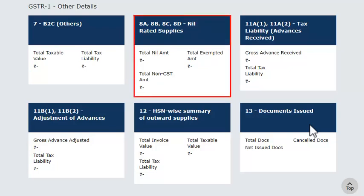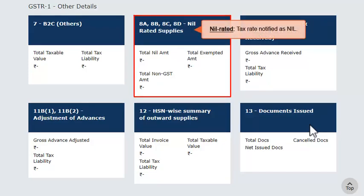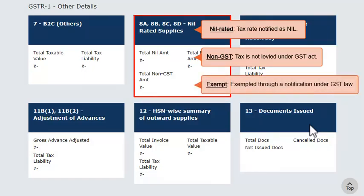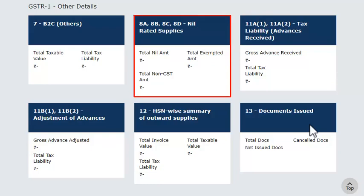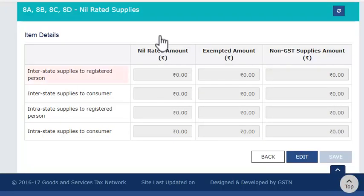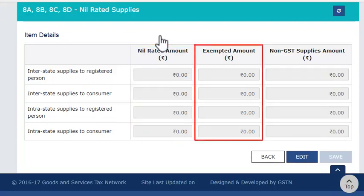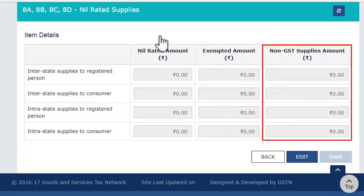GST has provisions for declaring nil rated, non-GST, and other exempt supplies. Nil rated are those supplies for which the tax rate has been notified as nil. Non-GST are those supplies on which tax is not levied under the GST Act, such as for supply of wine, beer, land, etc. Whereas other exempt supplies are those supplies which have been exempted through a notification under the GST law. While all these supplies carry a zero rate of tax, they must all be captured separately in GSTR1. Click the Nil Rated Supplies block to open its fields. The categories shown are: Interstate Supplies to Registered Person, Interstate Supplies to Consumer, Intrastate Supplies to Registered Person, and Intrastate Supplies to Consumer. For these categories, you can specify the value of supplies that were either nil rated, exempted (excluding nil rated and non-taxable), or categorized as non-GST supplies.